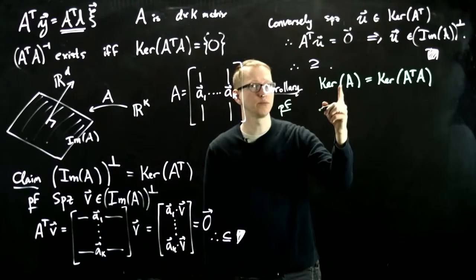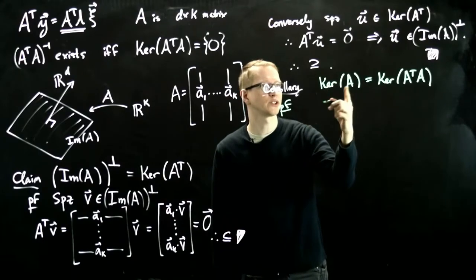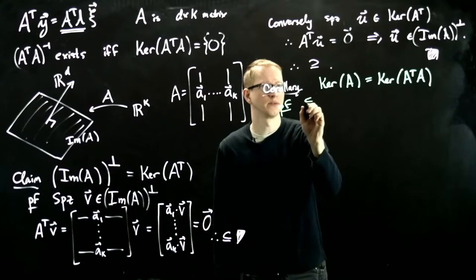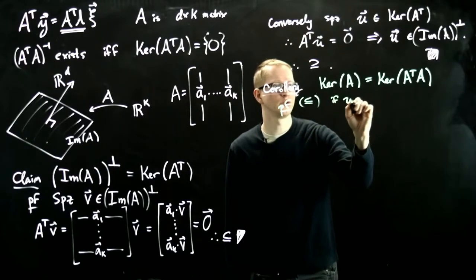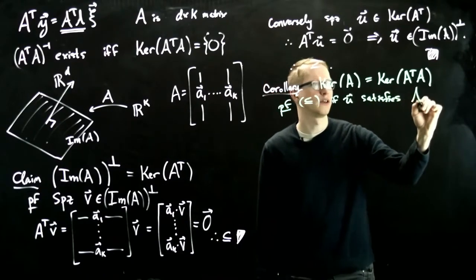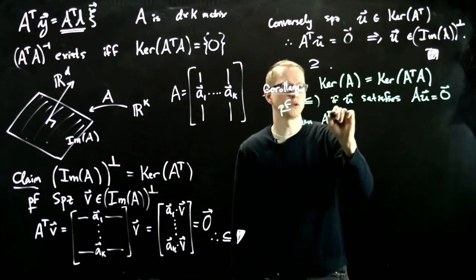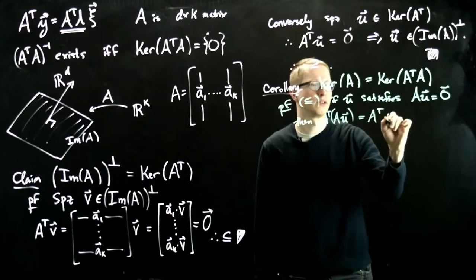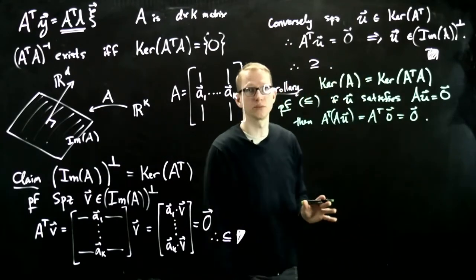So let's prove this. In one direction, it's pretty obvious, but I'll write it out anyway. So let's first prove that the kernel of A is inside here. If U satisfies AU equals 0, then A transpose AU, because this thing is 0, also equals 0. So that direction is pretty straightforward.